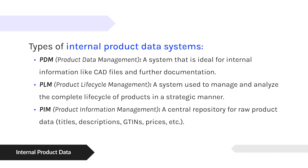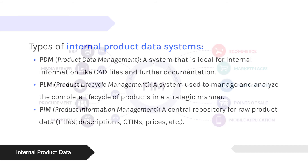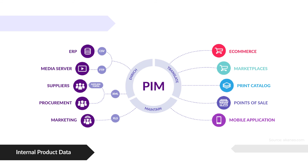We're going to talk more about internal product data — going from organizational data to more about the product data itself. There is product data management, product lifecycle management, and product information management. I'm going to focus mostly on product information management. PDM can even be down to the files for the CAD building of certain products, so there's data out there that is more about the manufacturing of the product. I want to focus on a PIM, a product information management system — it's their golden record, where they keep their main source of product content that can be syndicated out to other channels.